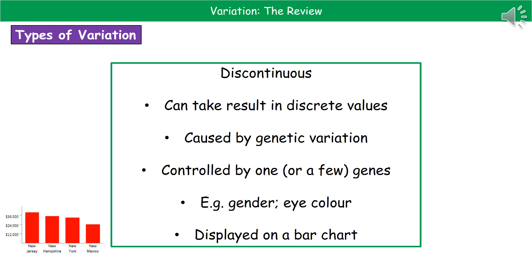The second type of variation is discontinuous. These will only result in discrete values, so they fall into very clear categories, and they are caused by genetic variation only. These ones tend to be caused by a single gene, or in some cases a very tiny number of genes — not large numbers. Examples include gender or eye colour.